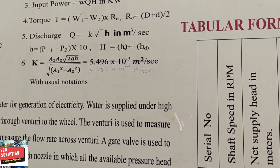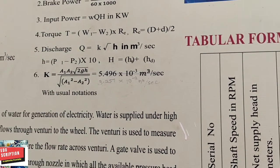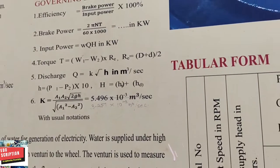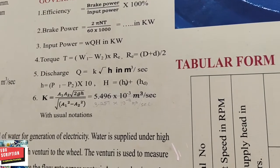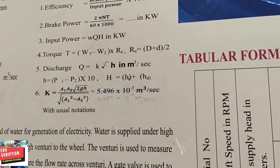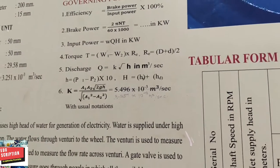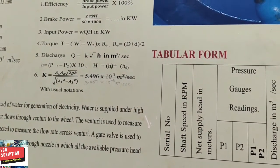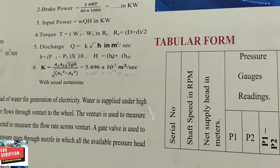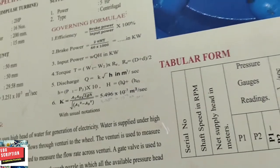By applying that formula we find out the effective radius and put that value. Another part is N. Initially we adjust that N to maintain a constant RPM. N is the RPM of the shaft, the speed of the shaft. Next part is the input part: wQH. w is the specific weight of the water, Q is the discharge. In your tabulation part, Q is a vital thing.